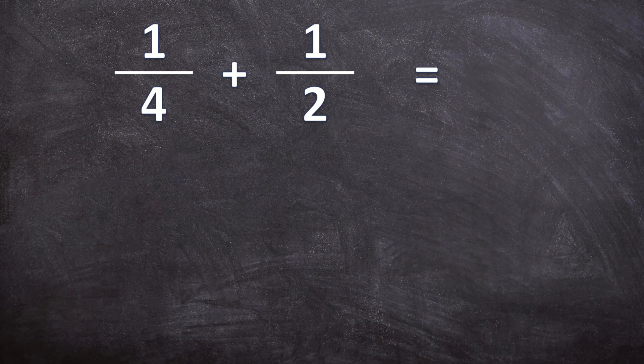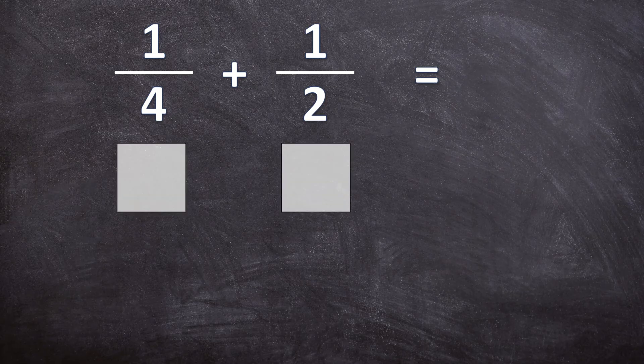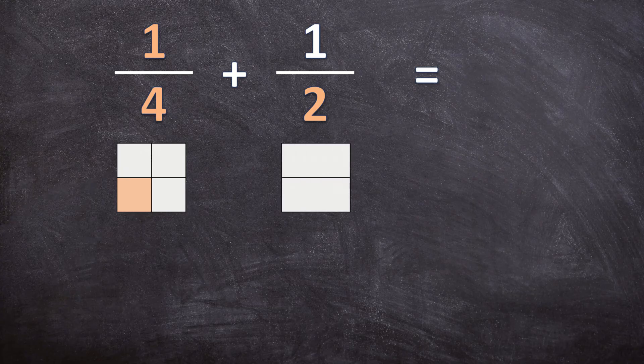Let's start with this example, and for the first example we're going to use pictures just to visualize it for ourselves. We'll take two identical shapes — the first shape we divide into four equal pieces and color in one of those pieces, and the second shape we divide into two equal pieces and color in one of the two pieces. Now we need to add these two together.